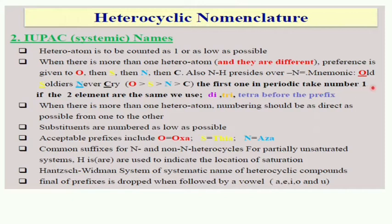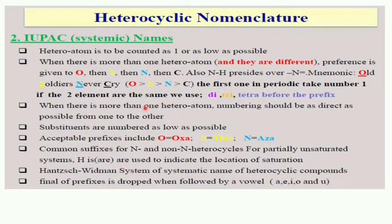If the second heteroatoms are the same, use prefixes di-, tri-, tetra-. For example, if two nitrogen atoms are present, mention it as di-; three nitrogens as tri-; four nitrogens as tetra-. When more than one heteroatom is present, numbering should proceed as directly as possible from one to another with the least numbering. Acceptable prefixes include oxa (for oxygen), thia (for sulfur), and aza (for nitrogen).